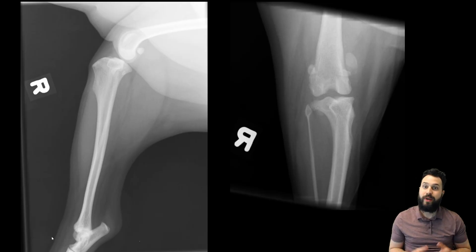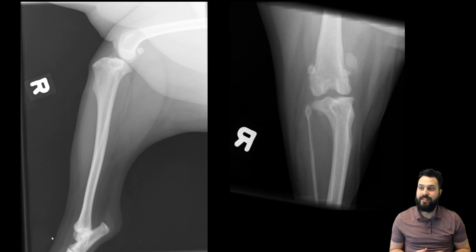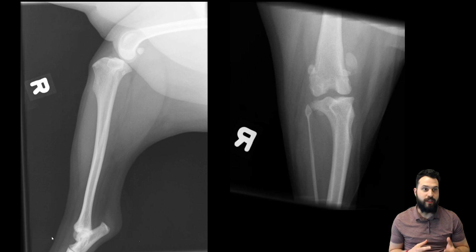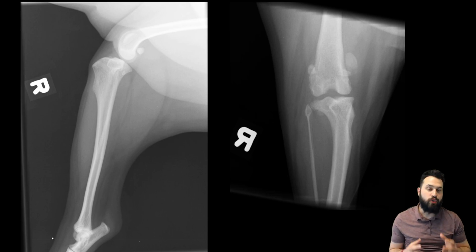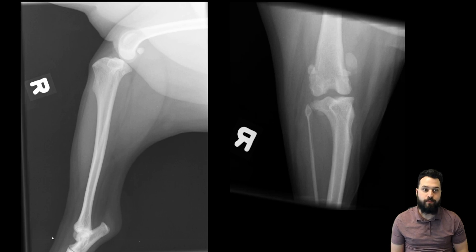Here we have orthogonal projections of our right stifle. On the left-hand side we have a lateral projection, which includes the entire structure from the level of the mid-femur to the tarsus, and then a cranial caudal projection tightly collimated to the stifle joint.